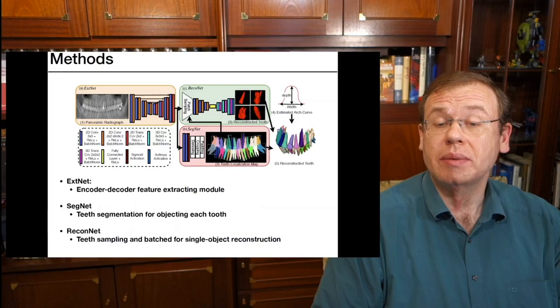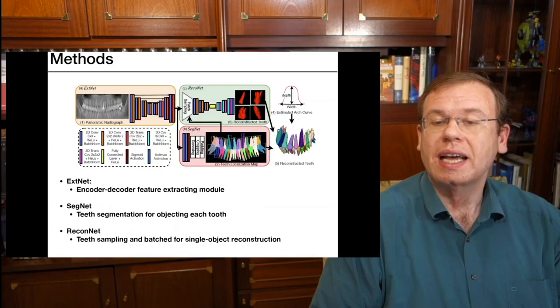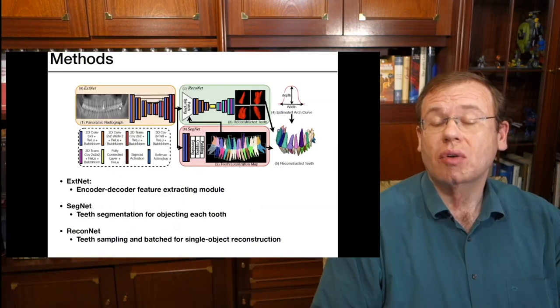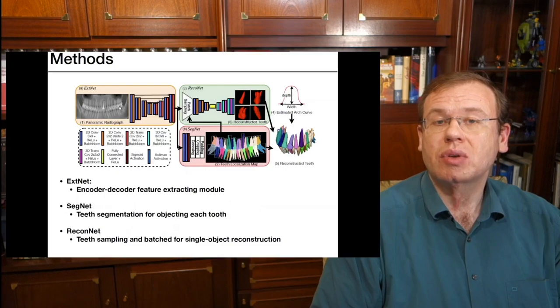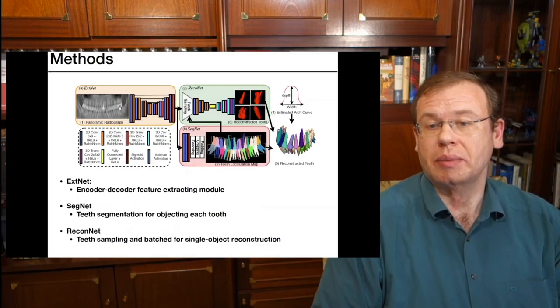So they try to come up with an idea how to extract the relevant information from these planar panoramic x-ray images. And here is what they did. So they take the image, process it with a feature extraction network, the x-net encoder decoder feature extraction module. And then they have two different networks, one for the reconstruction that produces from patches that have been generated from the feature extracting module, a 3D reconstruction of the individual tooth.